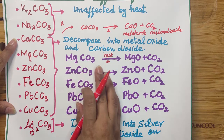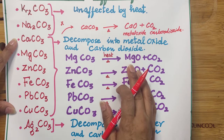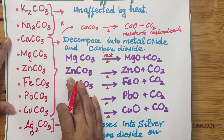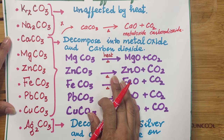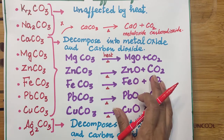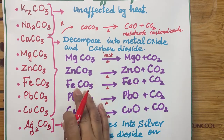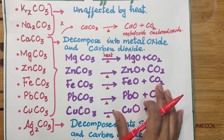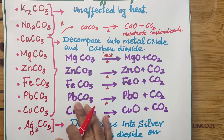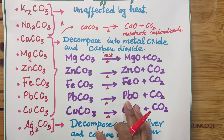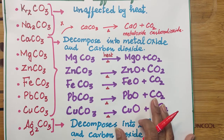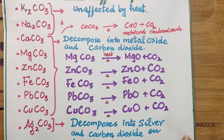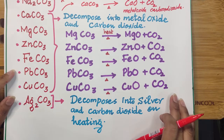Magnesium carbonate, when heated, forms magnesium oxide and carbon dioxide. Similarly, zinc carbonate when heated strongly produces zinc oxide and carbon dioxide gas. Iron carbonate when heated produces iron oxide and carbon dioxide gas. Lead carbonate after heating gives lead oxide and carbon dioxide gas. And copper carbonate when heated produces copper oxide and carbon dioxide gas.